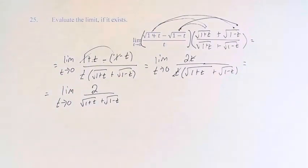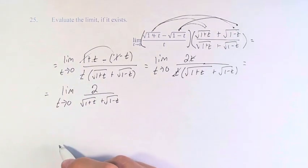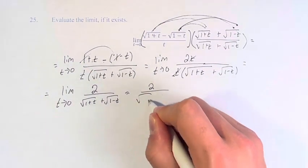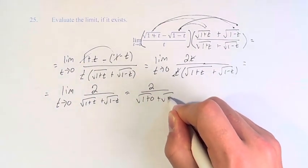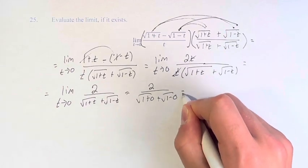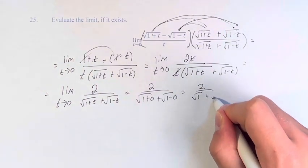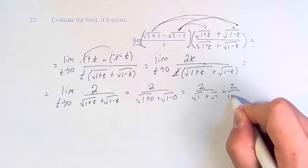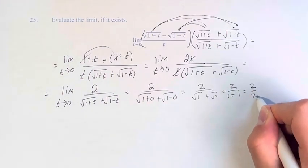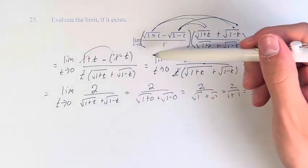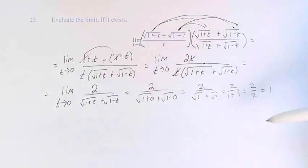Now we can plug in t equals 0 into this fraction without dividing by 0. So we have 2 over the square root of 1 plus 0 plus the square root of 1 minus 0. This is 2 over the square root of 1 plus the square root of 1, which is 2 over 1 plus 1, or 2 over 2, which equals 1. Therefore, the value of this limit is equal to 1.